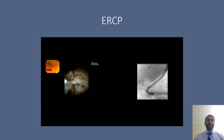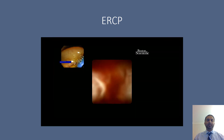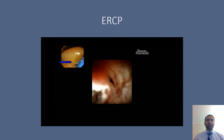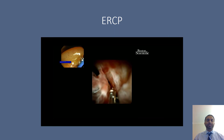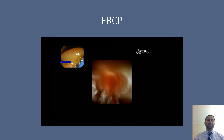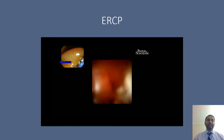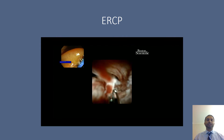We're able to advance the cholangioscope to the hepatic hilum, and we see this intraductal mass, which is very villous-appearing and frond-like. We are then able to advance a small biopsy forcep through the cholangioscope, which is able to be opened and take directed biopsies. This allows us to get better tissue than we normally would if we were to just brush the duct.